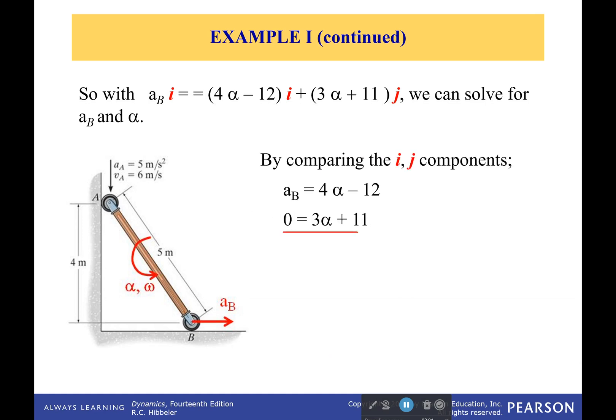So with a little bit of algebra, we can solve for it. And what we get is 26.7 meters per second and 3.67 radians per second squared for the angular acceleration, 3.67 radians per second squared.